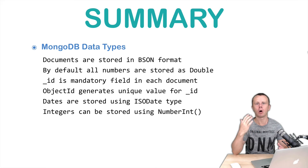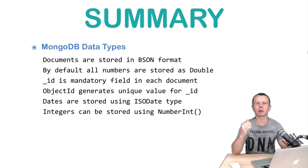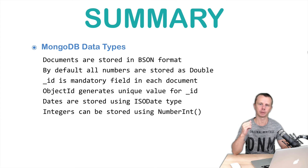We have also discussed how to properly store numbers in the MongoDB database. By default, each number is stored as a double type, but for example, if you want to store an integer, you need to use special MongoDB shell syntax such as NumberInt.